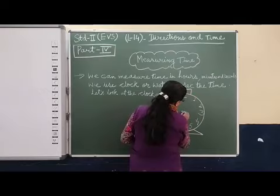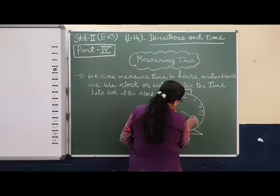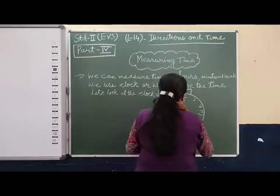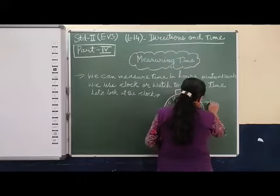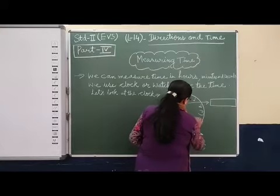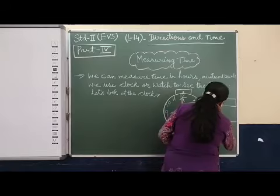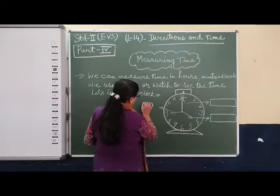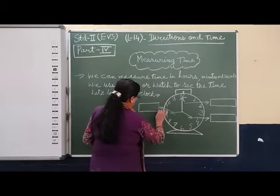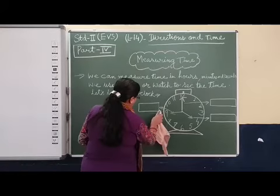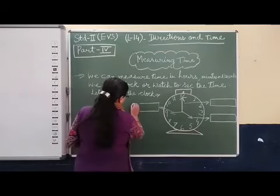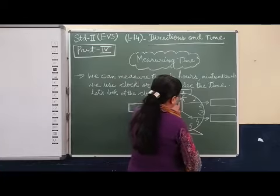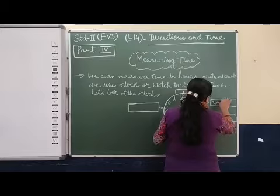One time we will draw. Suppose we are showing four o'clock. Short hand, long hand, and second hand also we will draw. This is the minute hand. This is the hour hand. And this one is the second hand.